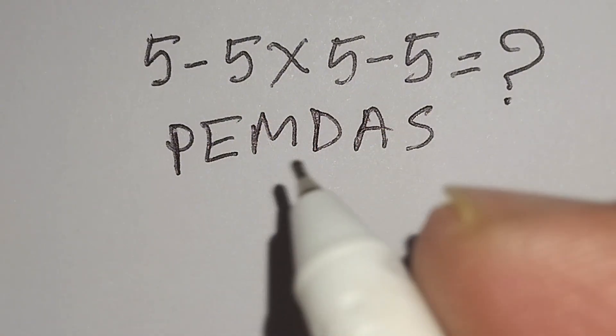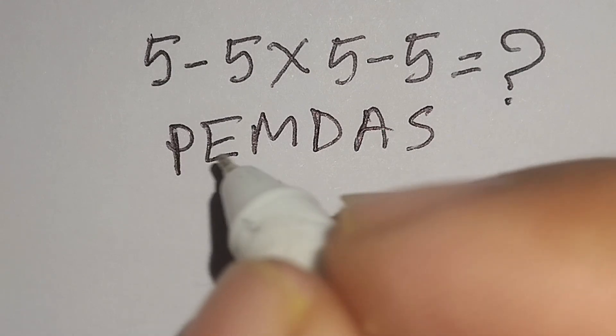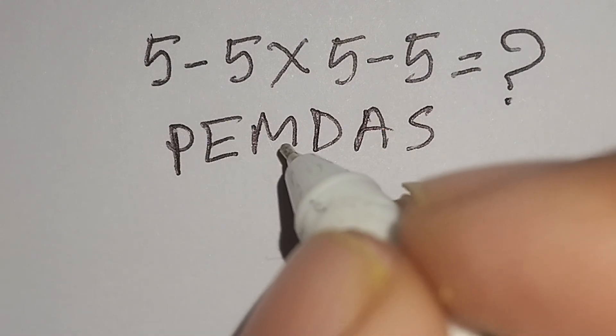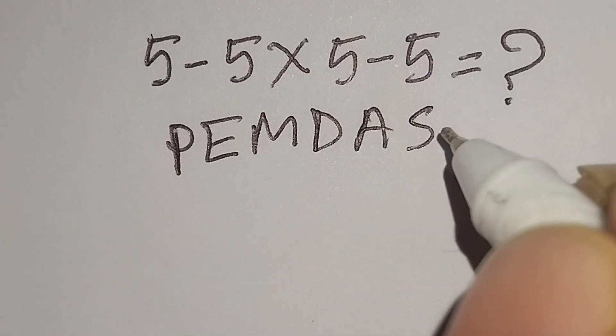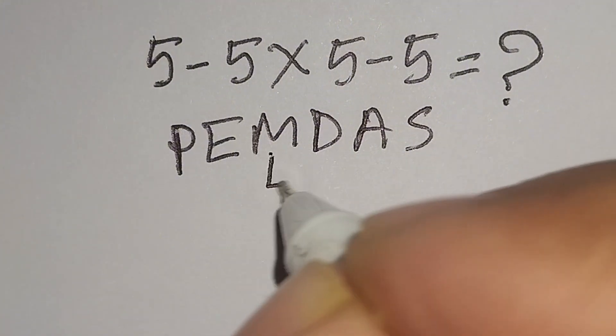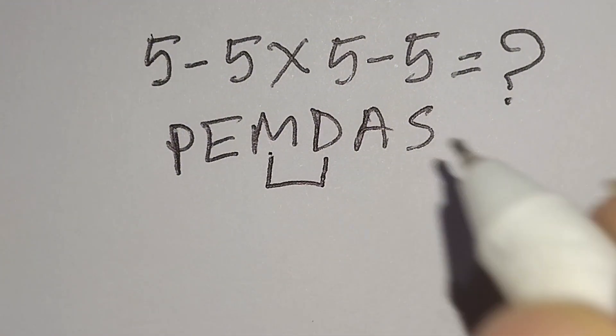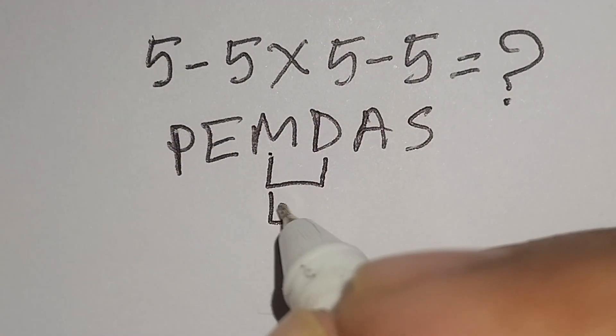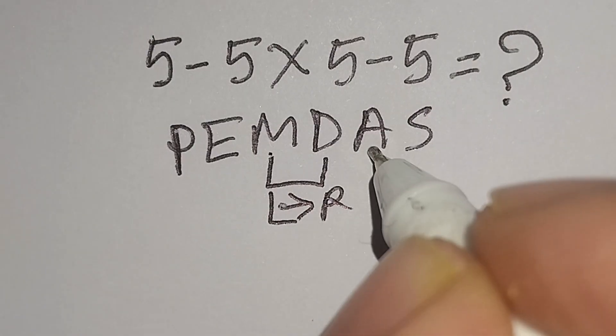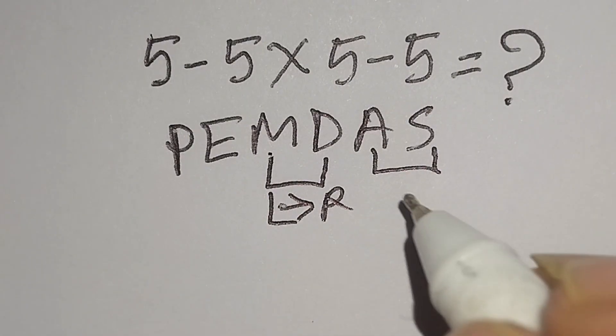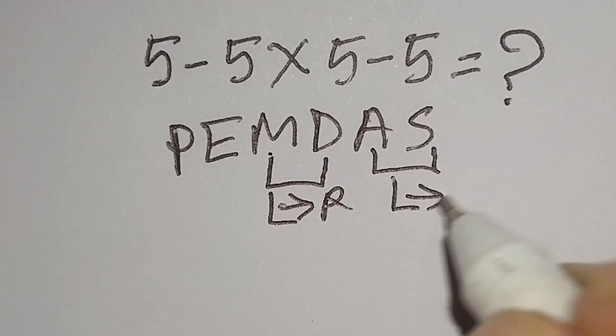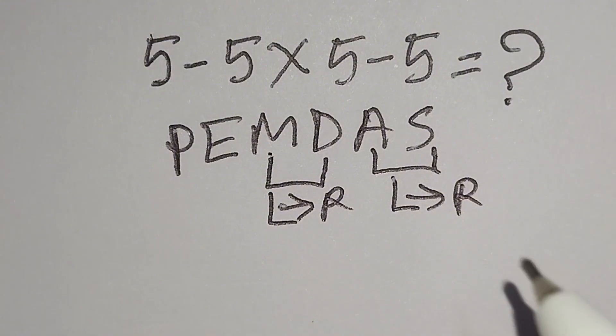According to PEMDAS rule, at first we have to work with parenthesis, then exponent, then multiplication or division, then addition or subtraction. Remember, multiplication and division have same priority, so we have to work left to right. And addition and subtraction have same priority, so we have to work left to right also.